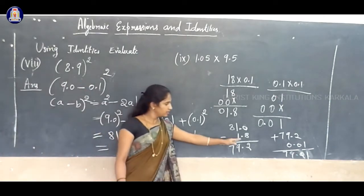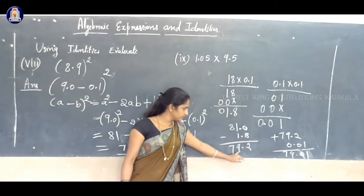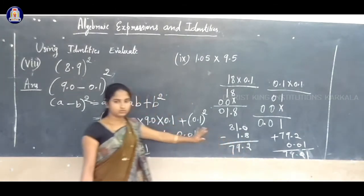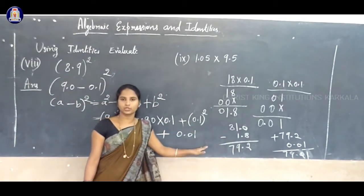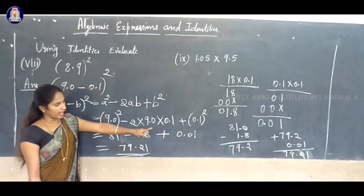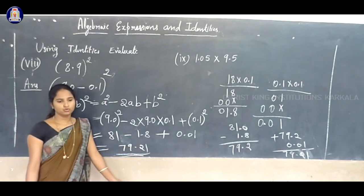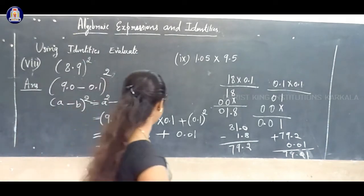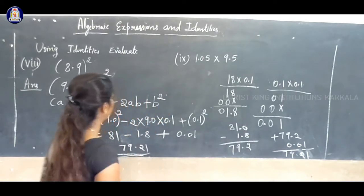So 81 minus 1.8 gives us 79.2 plus 0.01, and we are going to add to get 79.21. So 79.21 is the answer. Clear? Next term.